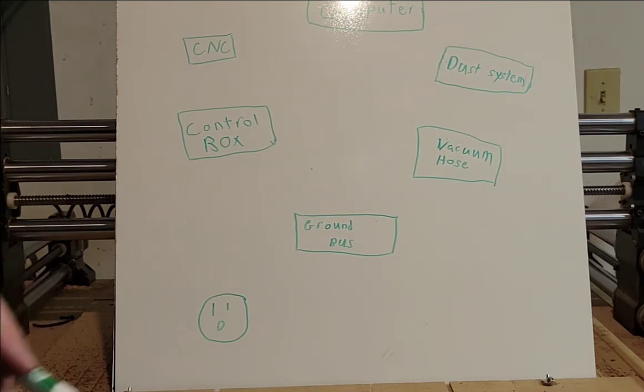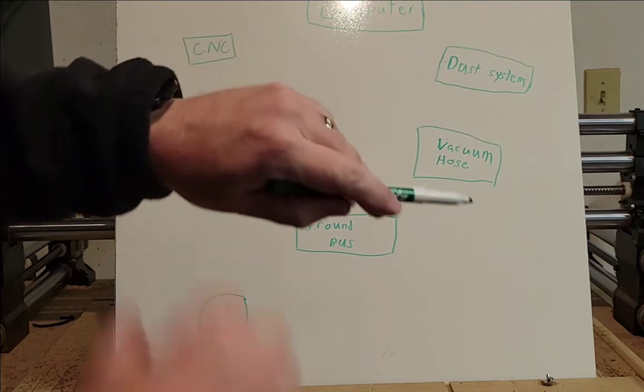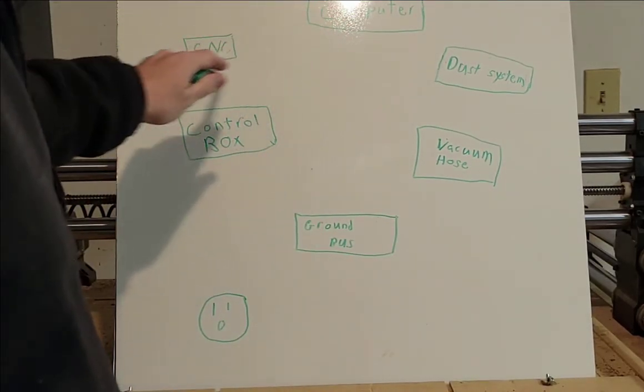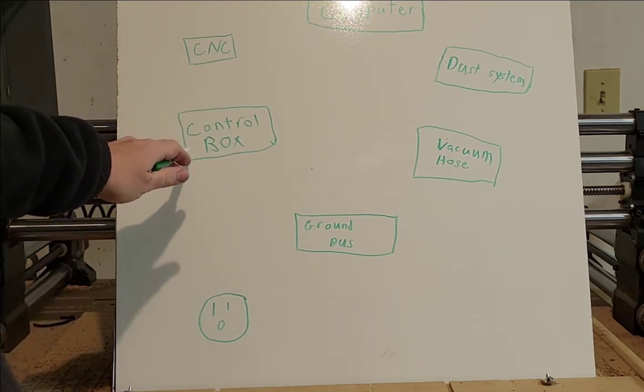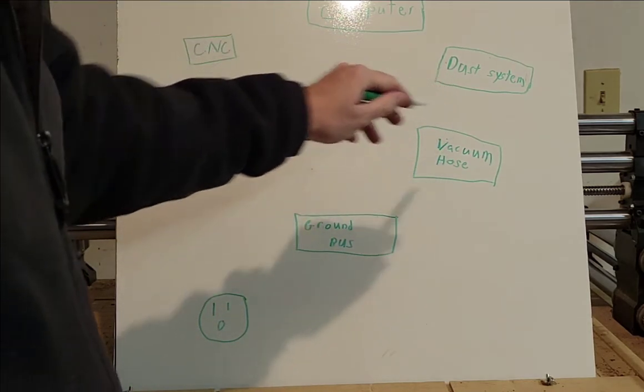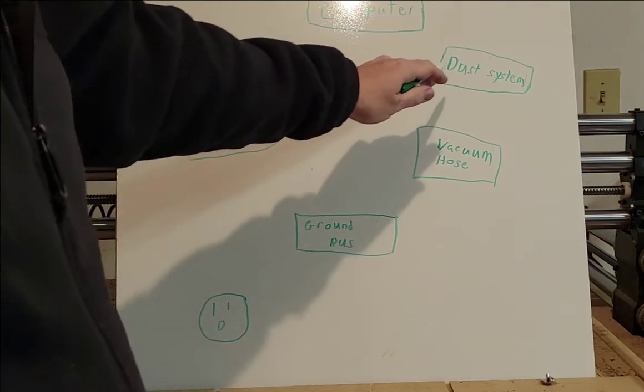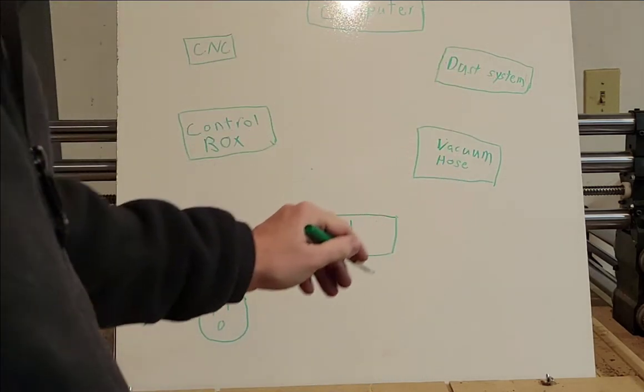Alright, so I hope you can see all this. There's a little bit of a glare I think, but you got your different components out here: you've got your computer, your CNC machine, your control box. And when I say CNC machine I'm talking about the frame of the CNC machine, your dust collector - that would be your vacuum system, your vacuum hose if you get a wrap around that.